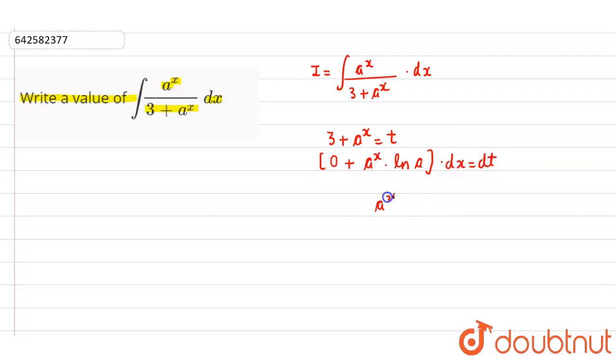So we can compute the value of a to the power x into dx. What is the value? It is 1 upon natural log of a into dt.